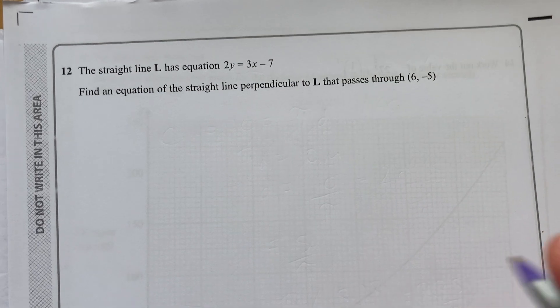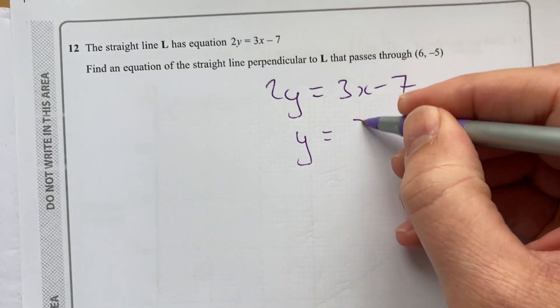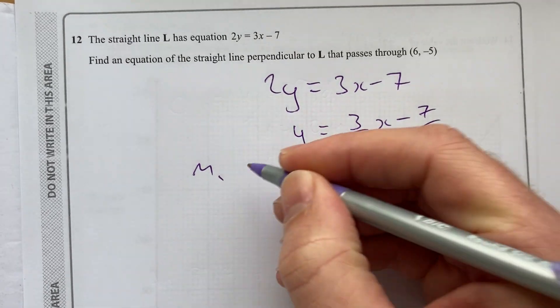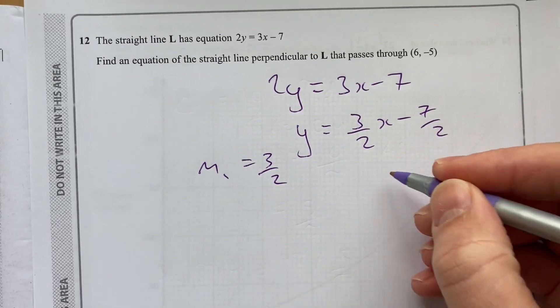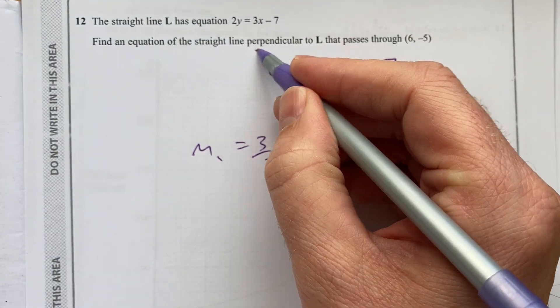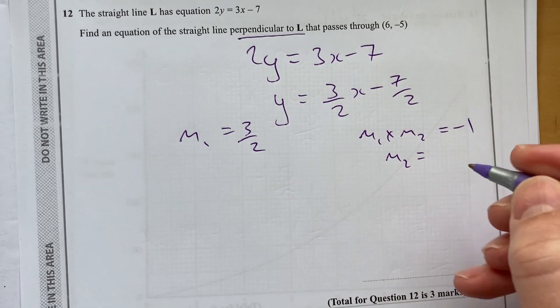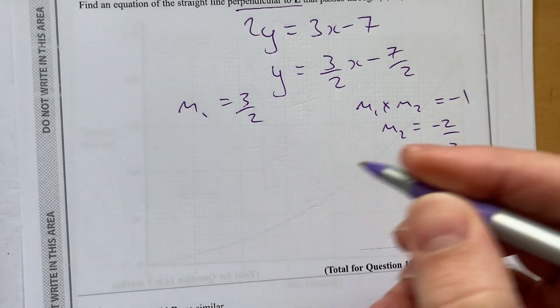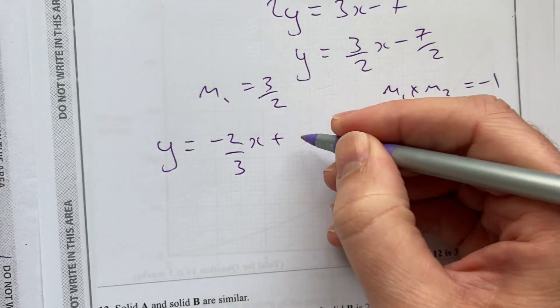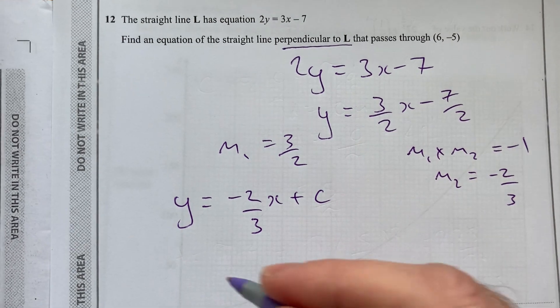Two more questions in this half of the paper. The straight line L has an equation 2y equal to 3x minus 7. Divide through by 2. Y equals 3 over 2x minus 7 over 2. So, this M is 3 over 2. Remember, perpendicular gradient. The product must be negative 1. Find an equation of the straight line perpendicular to L. So, I know that M2 is going to be the negative reciprocal minus 2 thirds. So, now I have some equation. Y equal to minus 2 thirds x plus c.